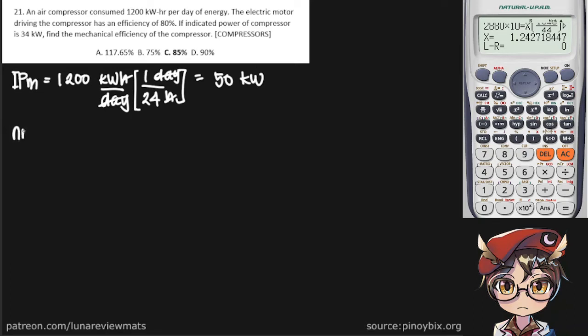...has an efficiency of 80 percent, or 0.8. If the indicated power of the compressor is 34 kilowatts, find the mechanical efficiency of the compressor in percent.